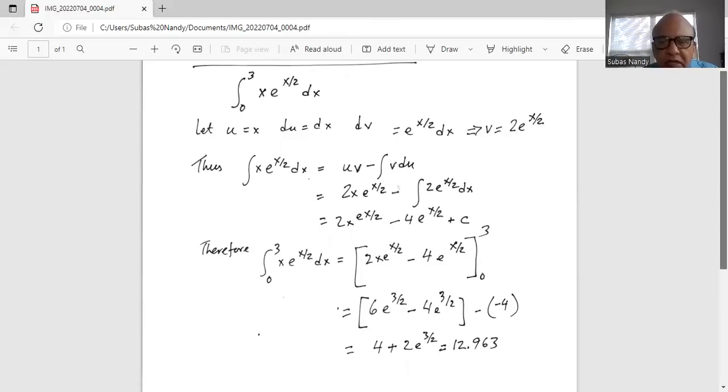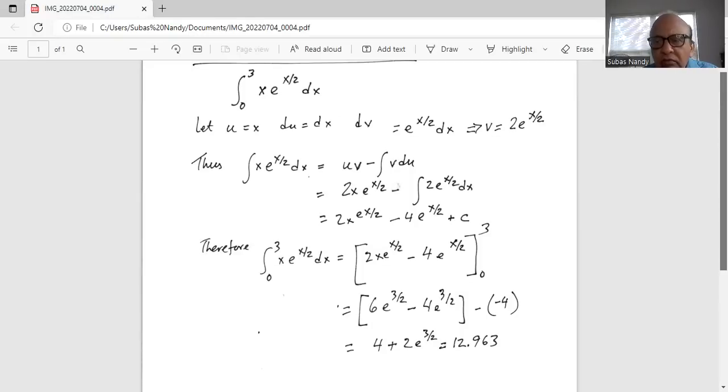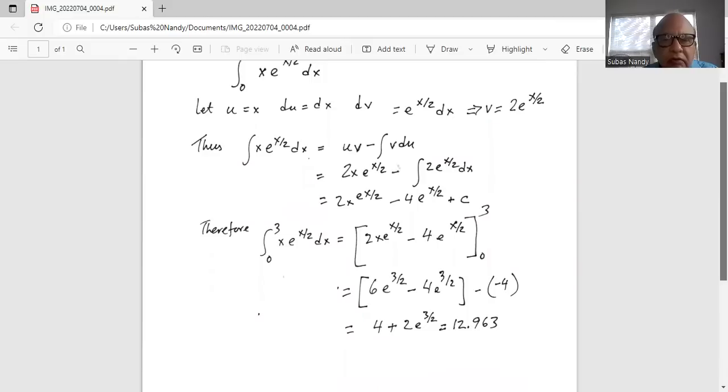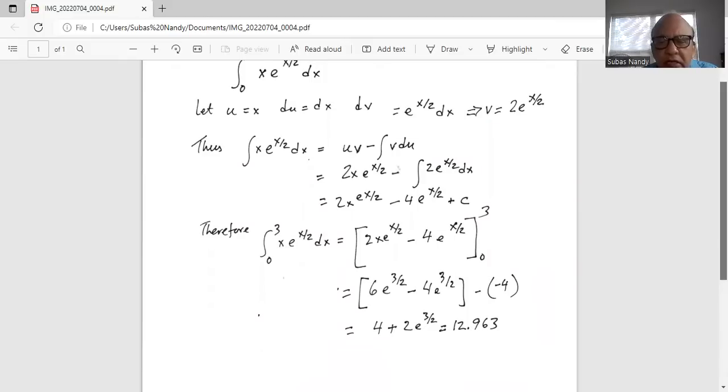Now there are two minuses, make it a plus, and we have 2e raised to the power of 3 by 2 plus 4, and if you use a calculator, we will find the total value of the integration from 0 to 3 is 12.963.